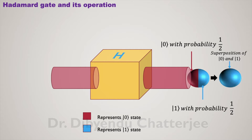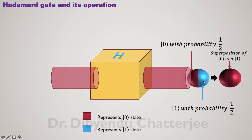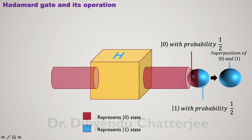Here I have shown that this is the superposition of states. This half of the color represents the probability of getting ket 1, and this other half represents the probability of getting ket 0.